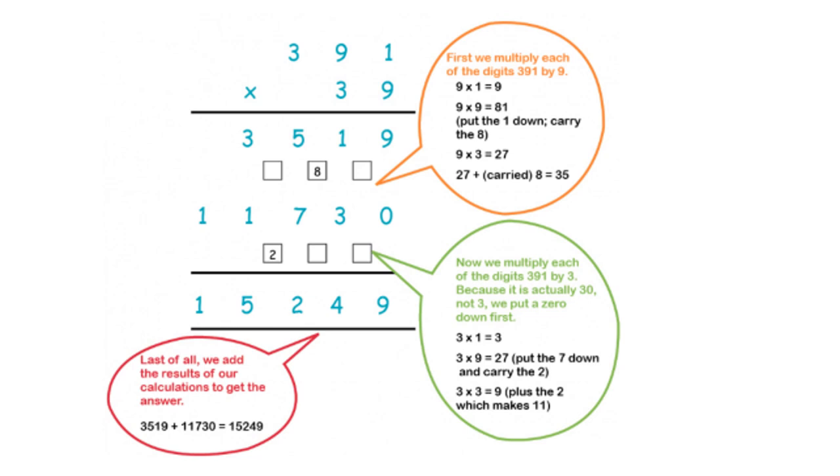If you look at multiplication, there are different ways of multiplying without a calculator. This example here is only one way. If we have the number 391 times 39, you start by multiplying 9 times 1, which is 9. 9 times 9, which is 81, and you carry 8. 9 times 3 is 27, plus that 8 gives you 35. So you have 3, 5, 1, 9, if you multiply by 9.